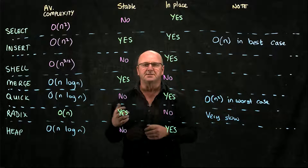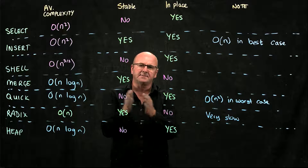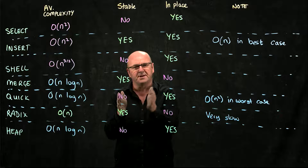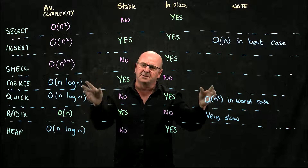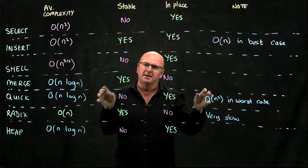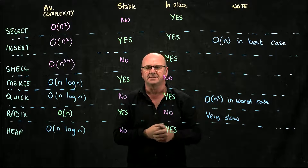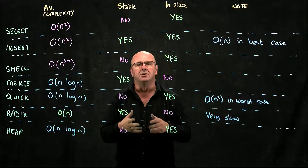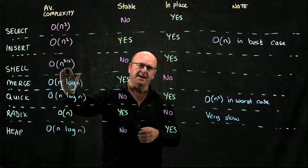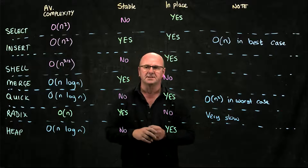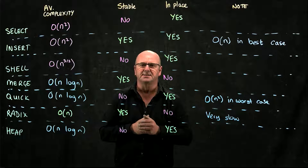We have the shell sort, which is a modification of the insertion sort. Instead of sorting each element with the adjacent element, you take a gap and sort elements that are gap distance apart. An open problem in computer science is actually how the size of that gap affects the average complexity of the shell sort. Shell sort is also not stable, but it is an in-place sort.